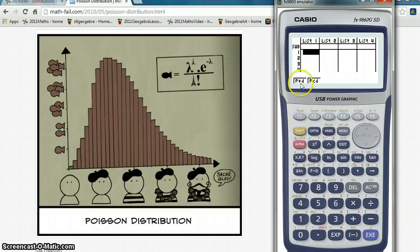Now, we've got PPD, that's for the equal sign, and PCD, that's for the less than or equal to sign.